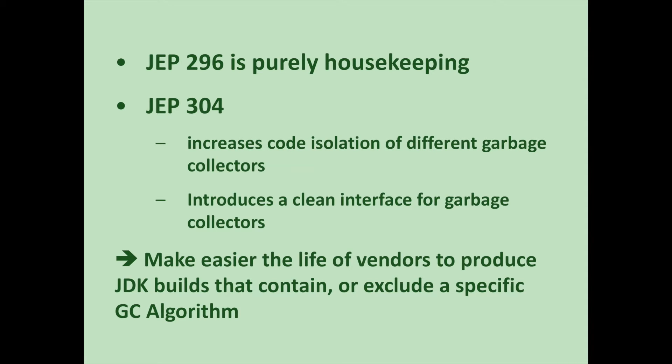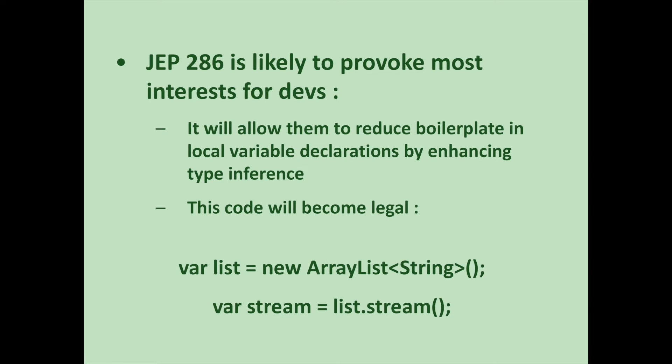JEP 296 is purely housekeeping, and JEP 304 increases code isolation of different garbage collectors and introduces a clean interface for garbage collectors. This means it will be easier for vendors to produce JDK builds that contain or exclude a specific GC algorithm. With new garbage collector approaches such as Shenandoah, ZGC, and Epsilon in development, this makes sense. There are even efforts within the community to deprecate and even remove the Concurrent Mark Sweep collector, known as CMS, although at present there is no production-quality feasible replacement for it.